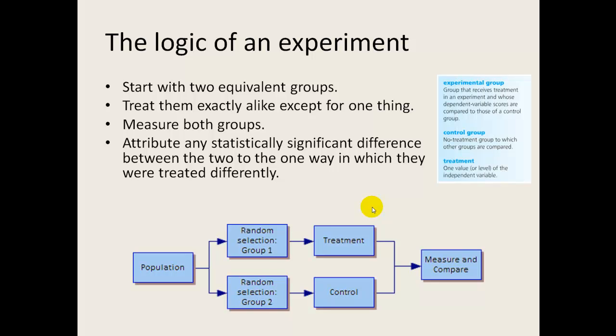So you start with a population, and then you create two groups. Now the way that this is usually ensured is by doing random assignment or random selection depending on how you're getting them from the population into those two groups. Then one group undergoes the particular treatment while the other group has nothing. And then finally you measure them.